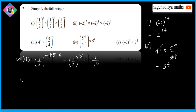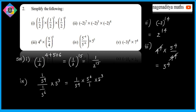Fourth problem: 5^(-4) × 5^(-6) × 5³. Converting: 5^(-4) = 1/5^4, 5^(-6) = 1/5^6. Combining, we get 5^6/1 × 5³ in the numerator over 5^4. Using a^m/a^n = a^(m-n), this gives 5^(6-1) = 5^5.